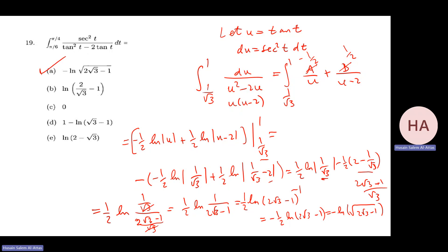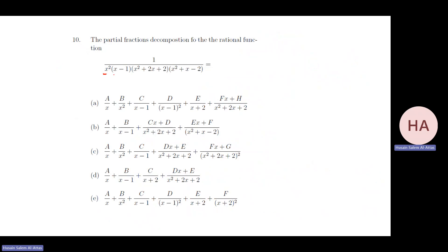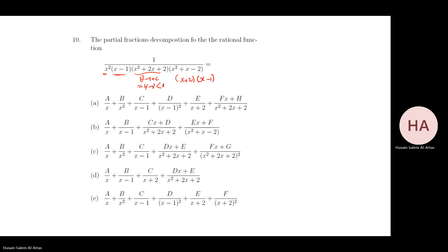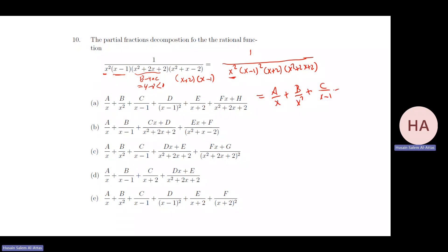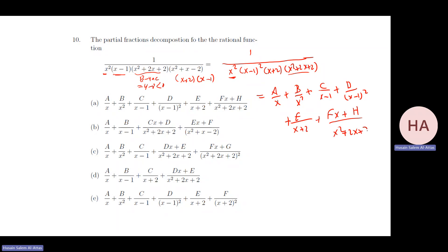The partial fraction decomposition for rational functions: linear factors are straightforward; irreducible quadratics require a linear numerator. For the denominator with x², (x-1)², (x+2), and (x²+something irreducible), I check the discriminant: b² - 4ac = 4 - 8 is negative, so it's irreducible. Also x²-x-2 = (x+1)(x-2) is factorable. So the decomposition is A/x + B/x² + C/(x-1) + D/(x-1)² + E/(x+2) + (Fx + H)/(x²+...).